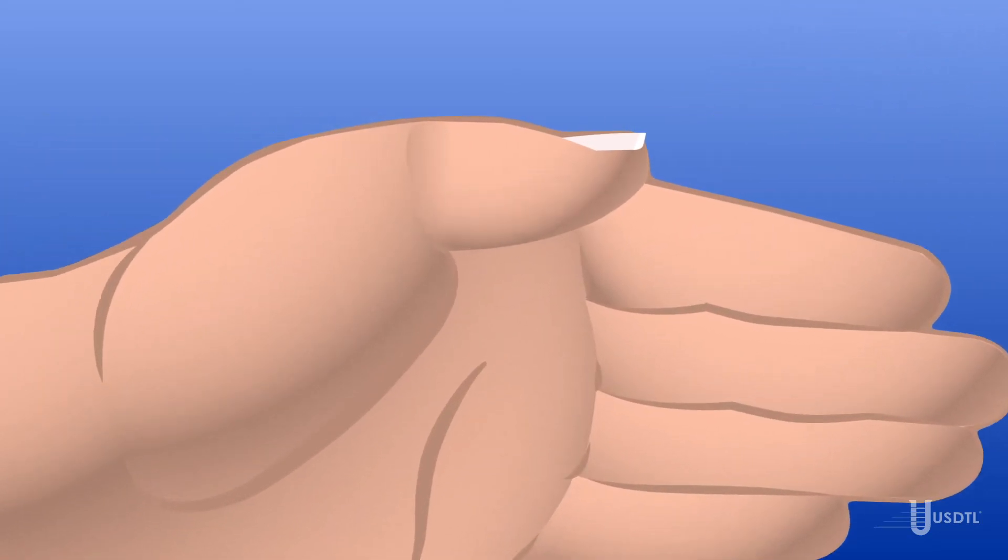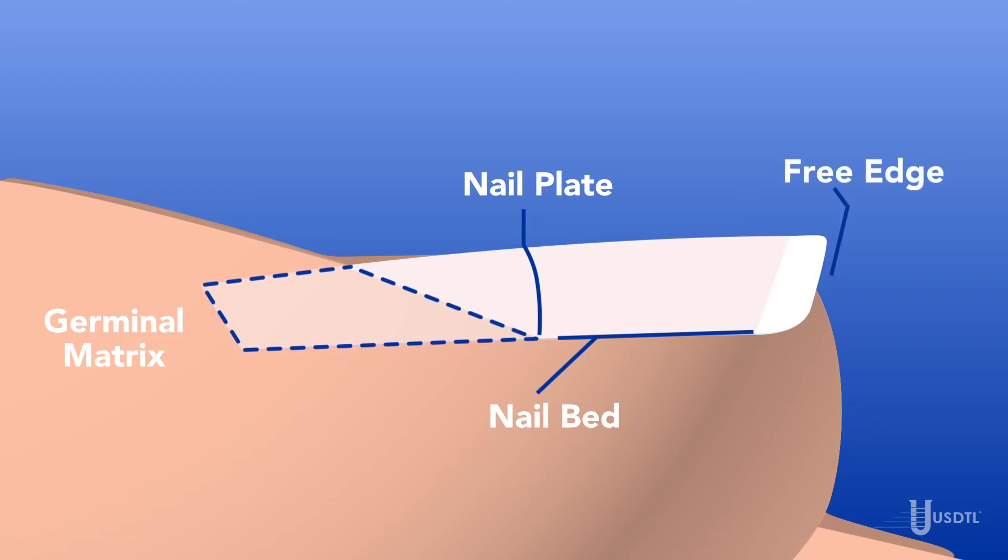There are four anatomical features of the nail that are relevant to understand nail testing: the germinal matrix, the nail plate, the nail bed, and the free edge. The nail originates at the germinal matrix and grows outward toward the fingertip.